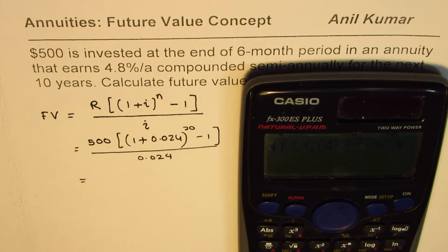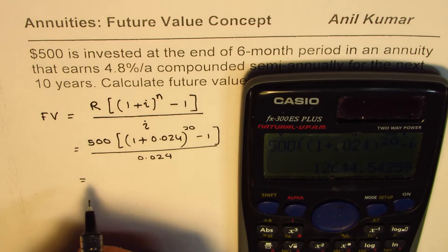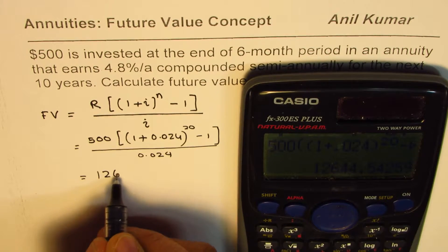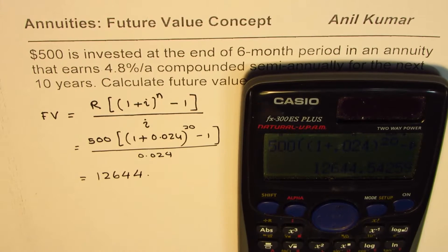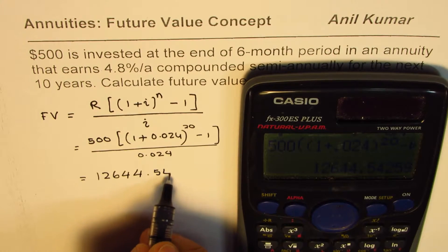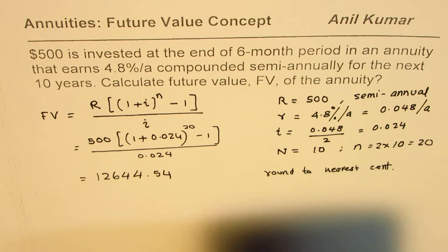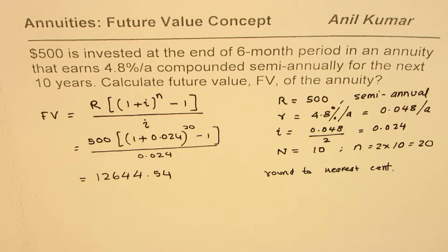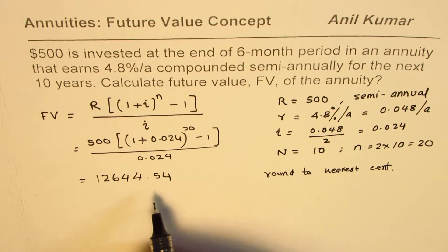And then take away 1, bracket close. So the second bracket is being closed now. Divide by 0.024 equals to your answer which is 12644. So just write 12644 decimal, you need to round this .544, so it means .54.